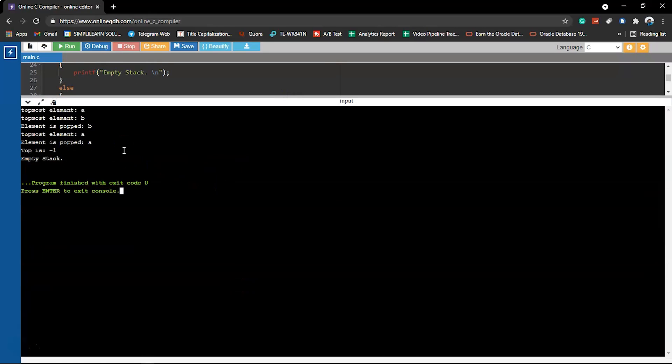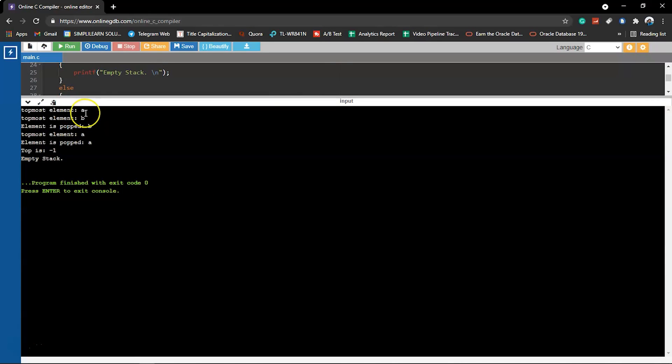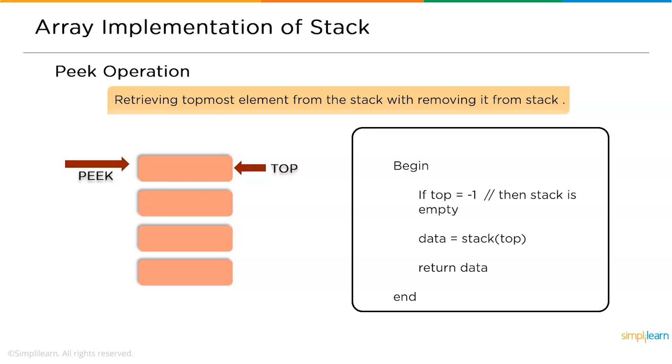As you can see, the code got successfully executed. The topmost element is A, and the topmost element is B after the element is being popped away. It says that the element B was popped out, and after that the topmost element was A. After that the element A was also popped out, and now the top is pointing to minus one, which means the stack is empty. So with that we have come to an end of this tutorial on stack implementation using array data structure.